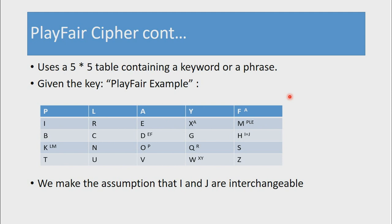To implement this cipher, it uses a 5x5 table containing a keyword or phrase. The first step is to come up with the 5x5 table which will contain 5 rows and 5 columns — initially it will be empty. Given the key 'Playfair example', you fill in the table by listing the elements of the key.